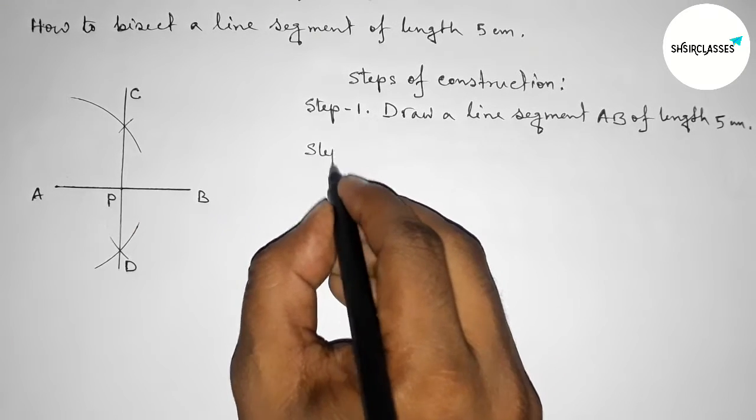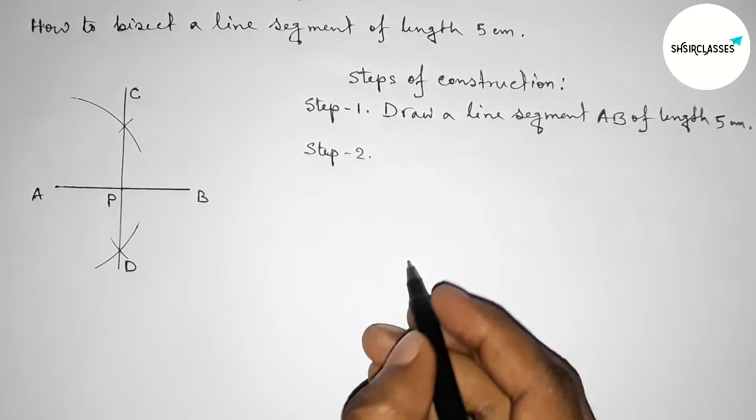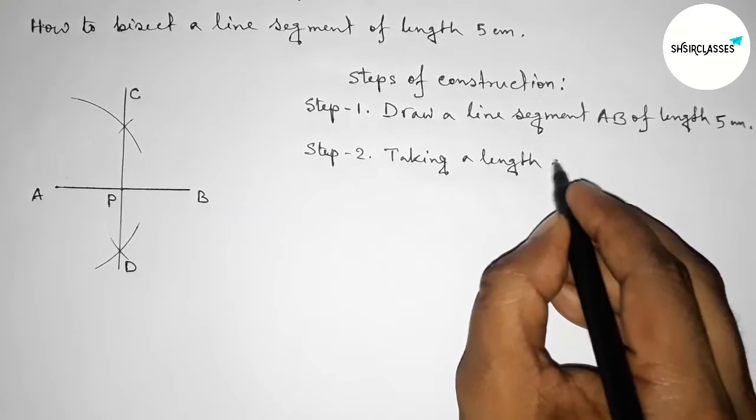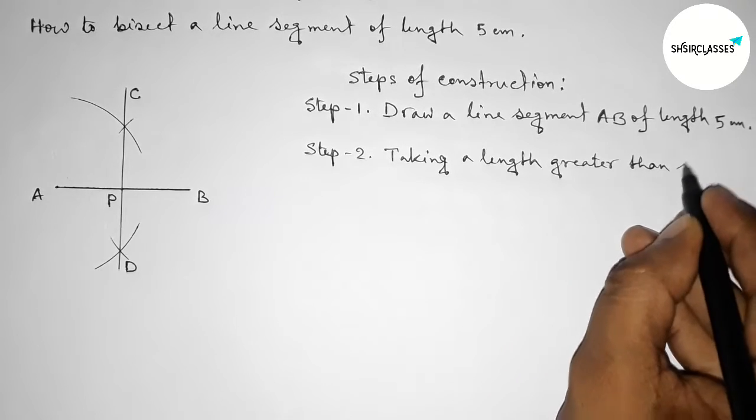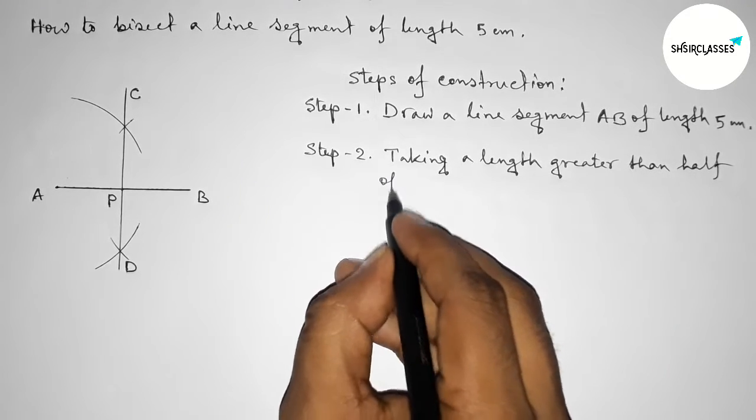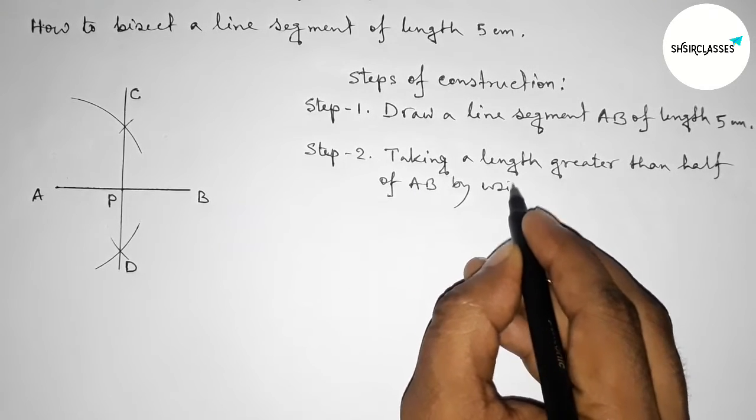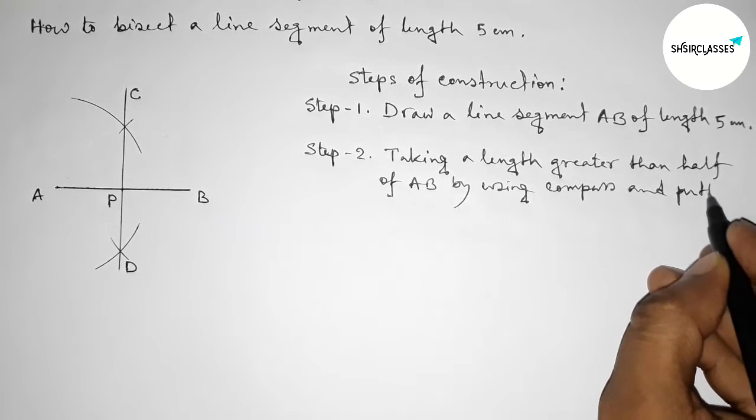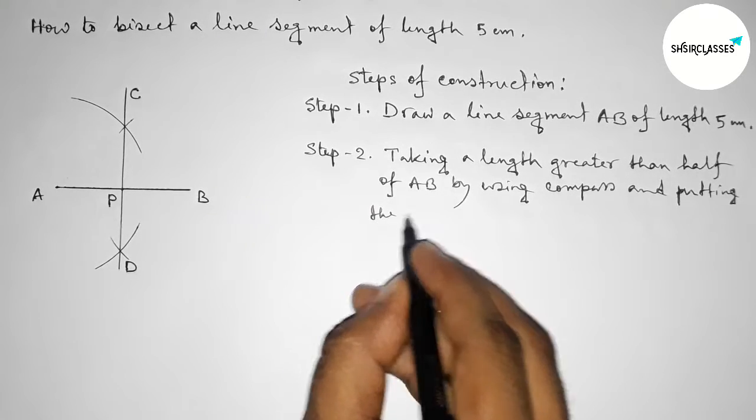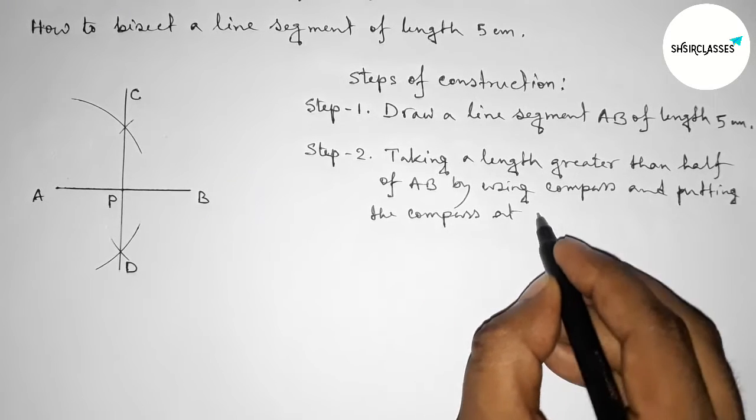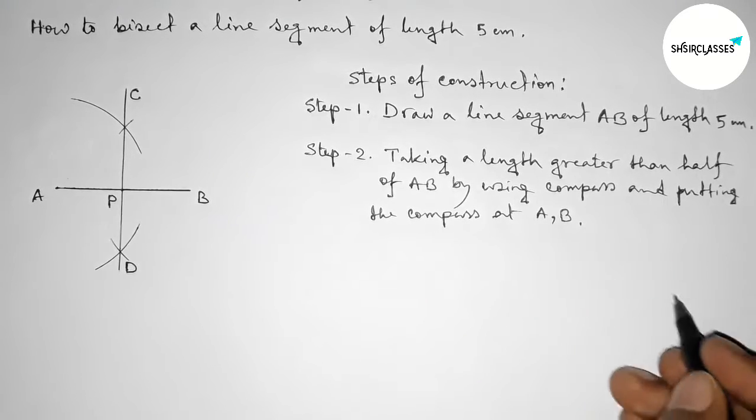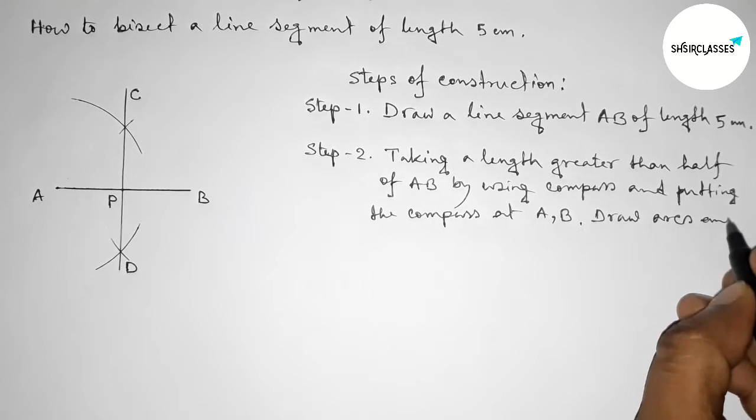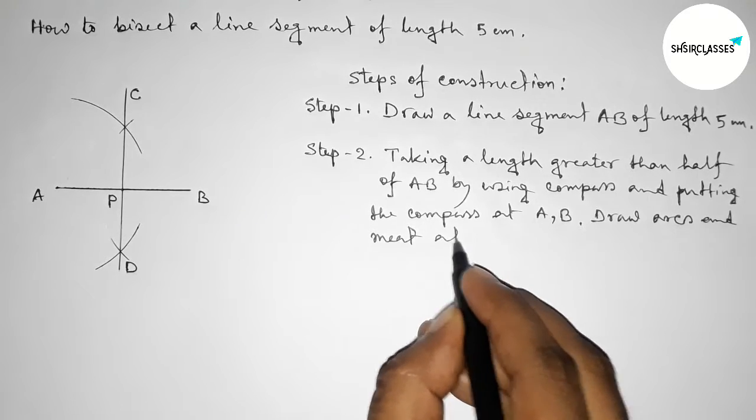Now joining this line, taking point C and D, so CD line meets the point AB at the point P. Step number two here: first taking a length greater than half of AB by using compass, so first we have to take a length greater than half of AB by using compass.